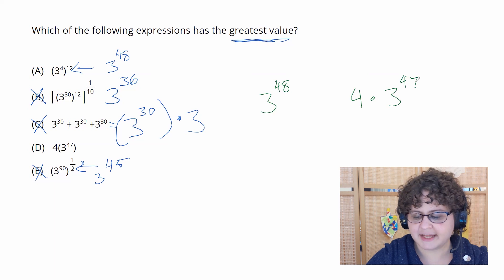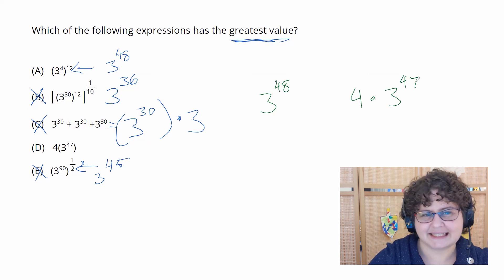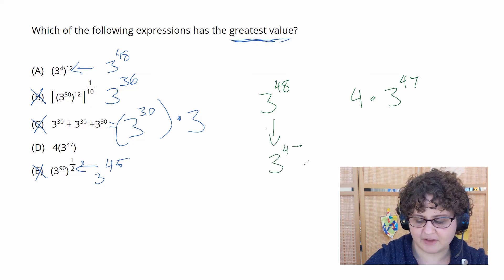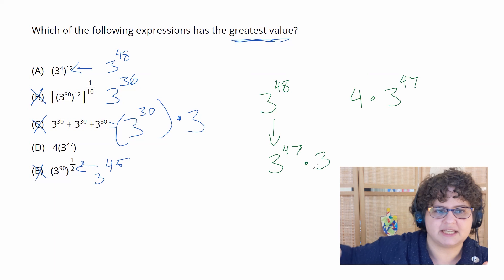So these two numbers are almost exactly the same. The difference is if I convert this down and I say this is 3 to the 47, it has an extra 3. So it is 3 to the 47 plus one extra 3 tacked onto the end.